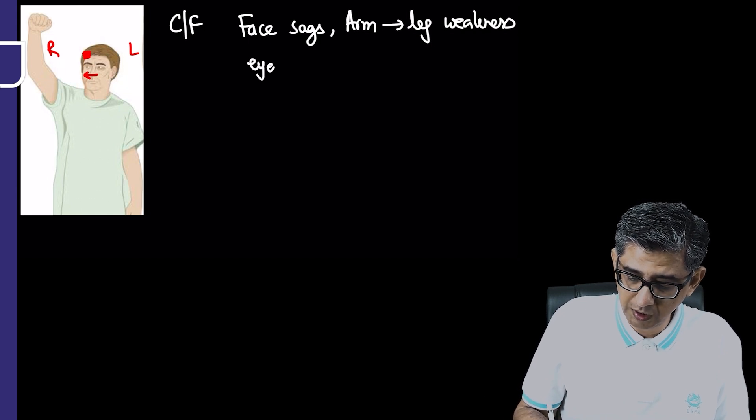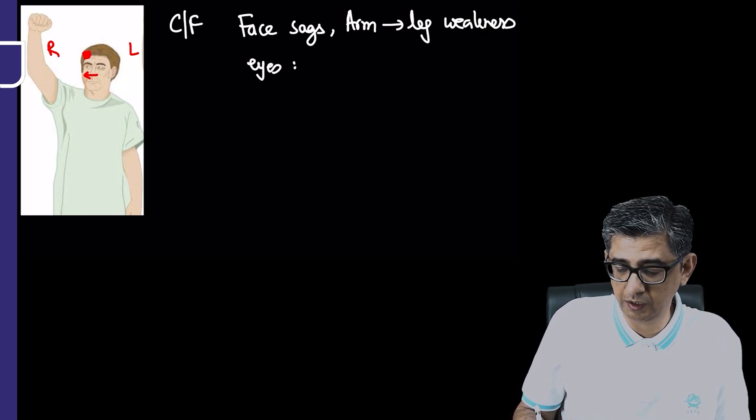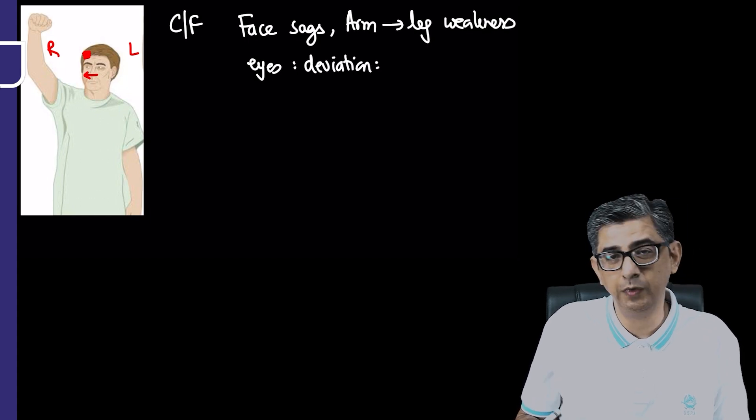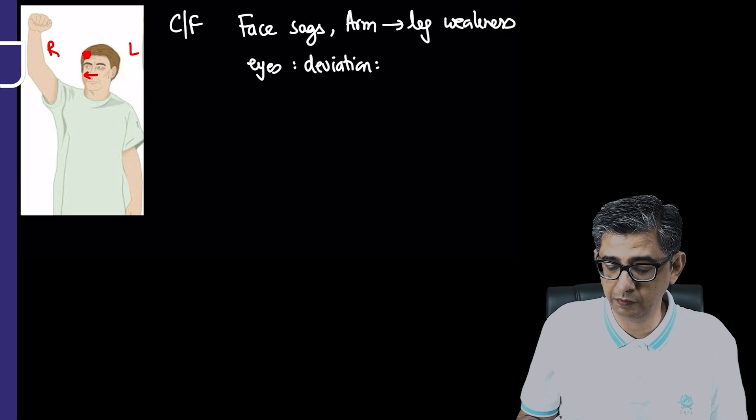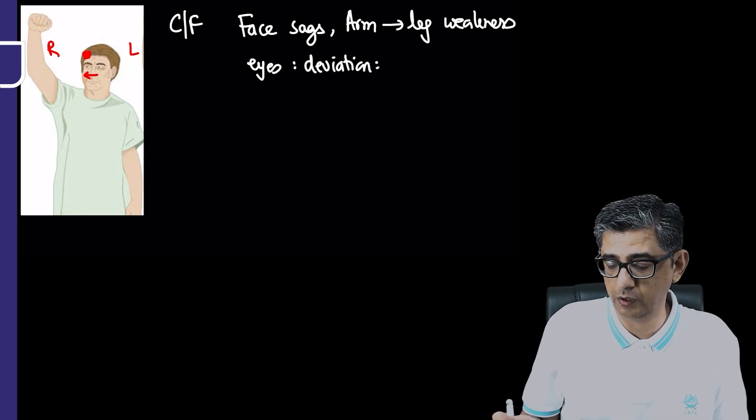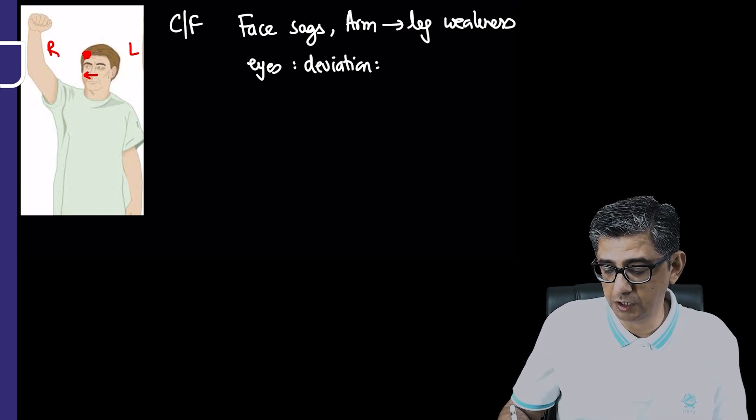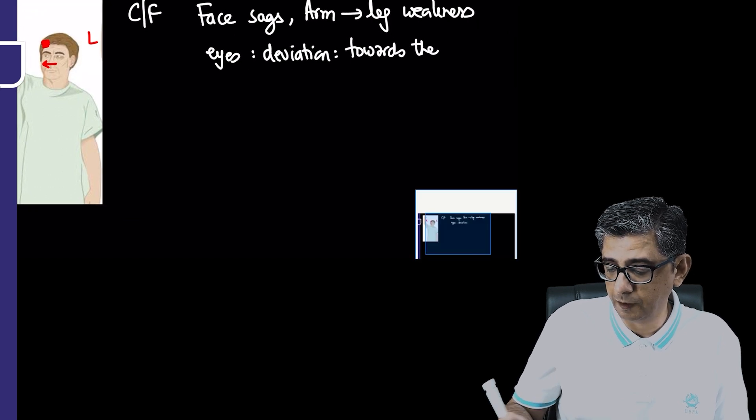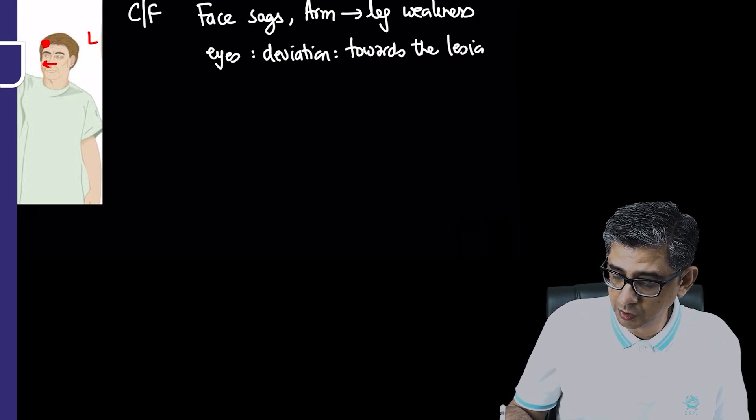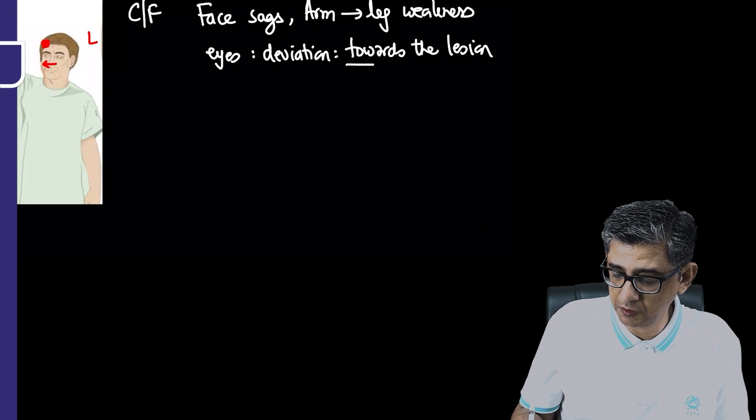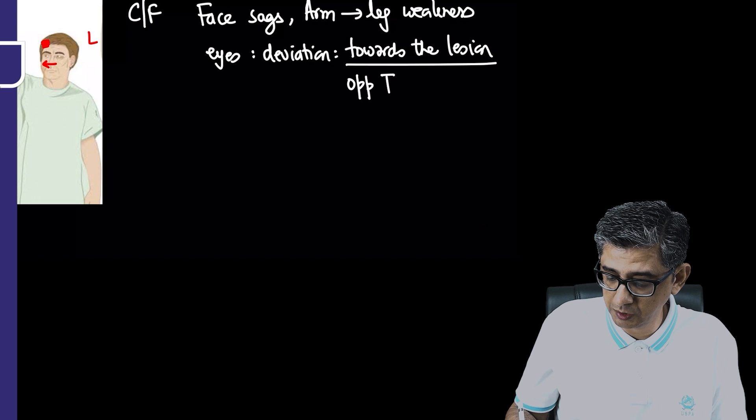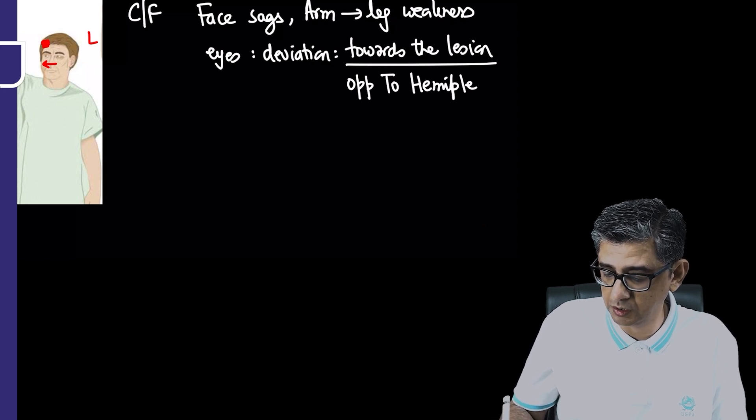You can notice that both eyes would be deviated. In pontine stroke, the patient looks away from the side of the stroke, whereas with cortical or subcortical lesion, the eye deviation occurs towards the lesion or towards the bleed.